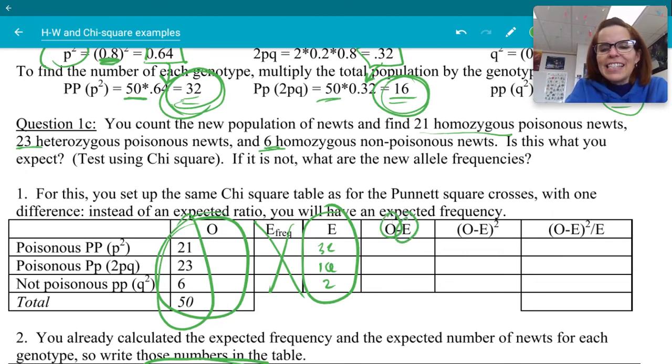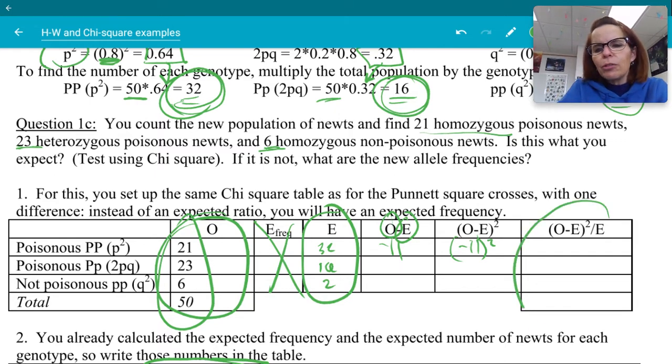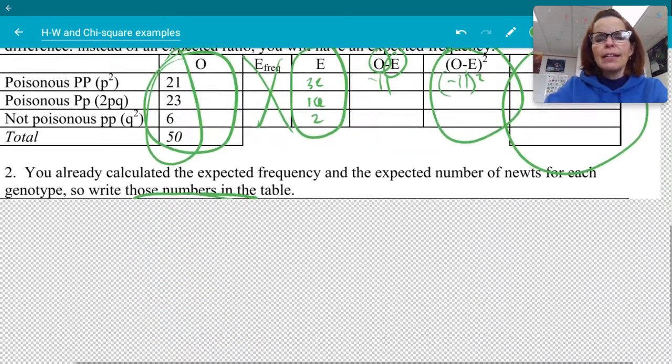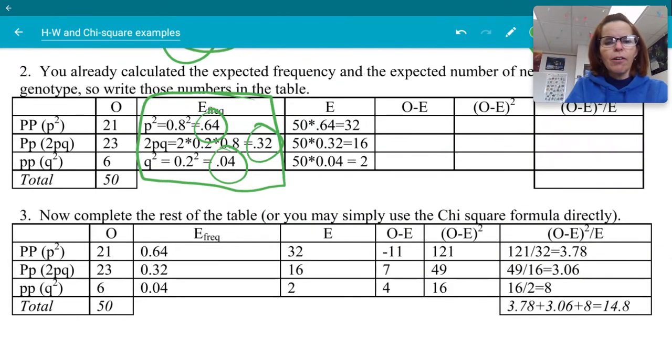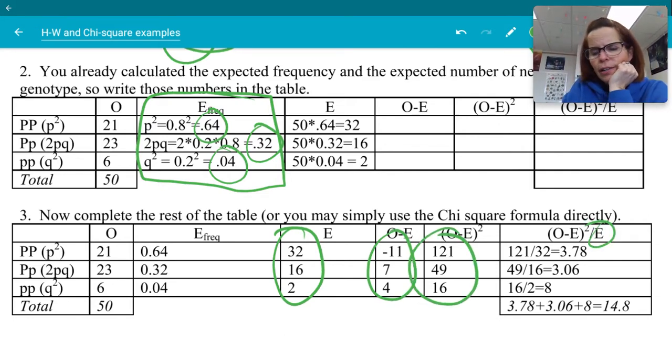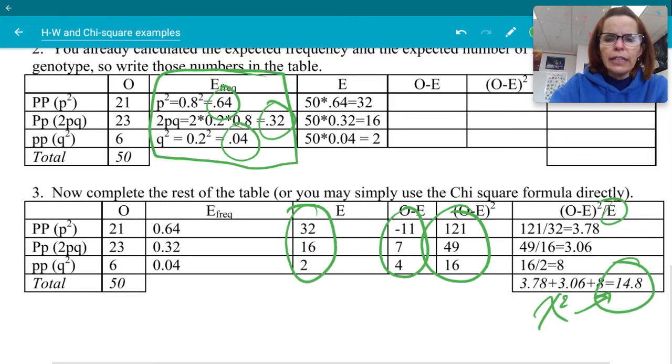So observed minus expected. So you've got 21 minus 32. So that's a negative 11. Now you square it, negative 11 squared. And remember, whenever you square a negative number, it's always positive. So over in this column over here, you're never going to have a negative number. I'm not going to do all the math here. That seems like a waste of our time because they did it right here. So down here, we see the expected, the O minus E, and now they squared it, and now they divided by E, which I had not done yet. So we come up with an answer of 14.8. That is our chi-squared value, which is a pretty high value. But we need to take a look at our degrees of freedom.